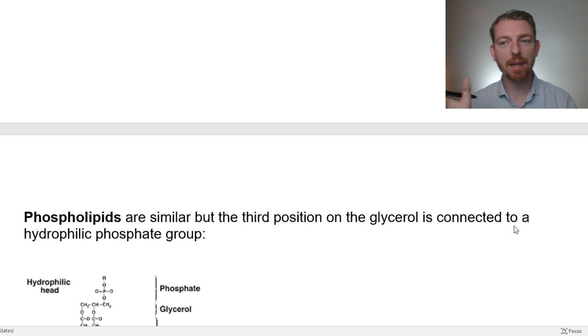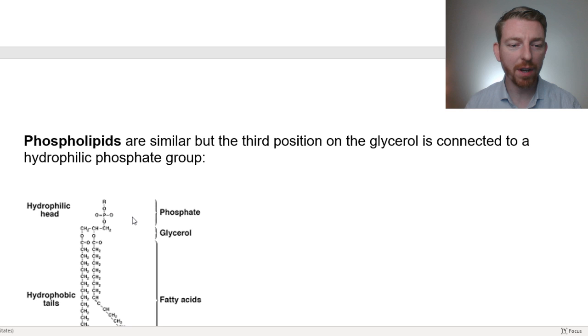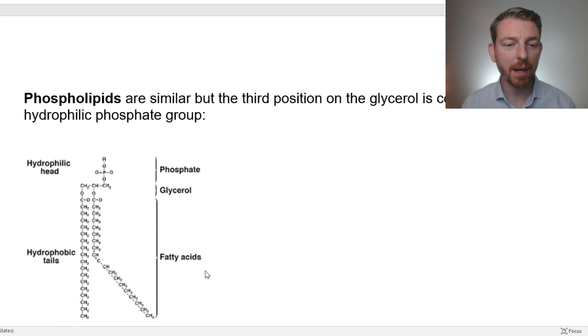A variation on a theme here and one that we're kind of driving towards and being more interested in are phospholipids. So these are very similar to the glycerides but one of the positions on the glycerol, instead of another fatty acid, is connected to a phosphate group. So this is a phosphorus with four oxygens attached, bonded through one of those oxygens as a phosphate bond in this case onto the glycerol backbone and then two fatty acids as legs coming off of it.